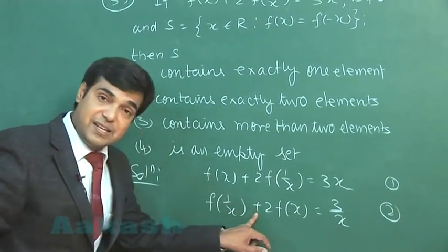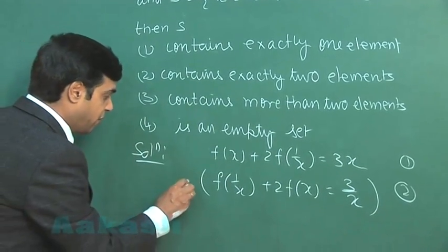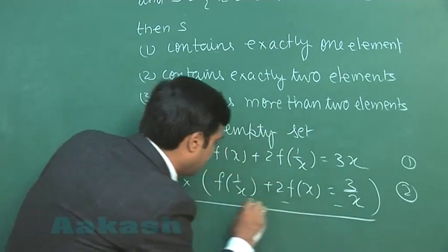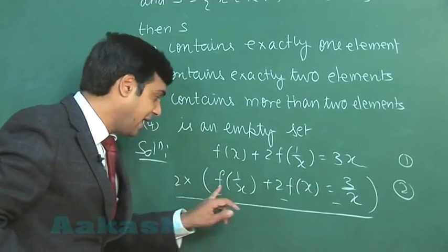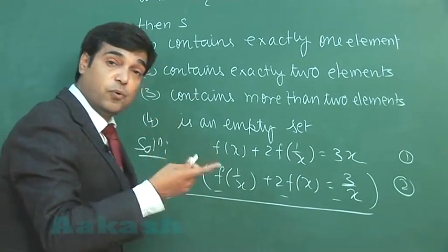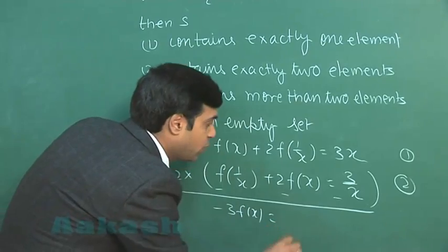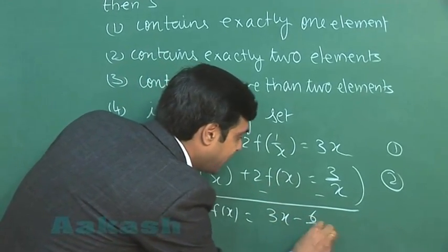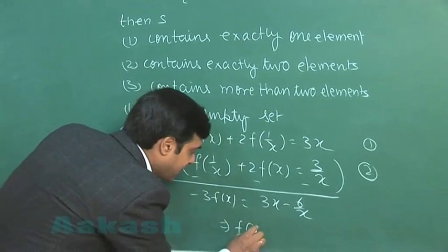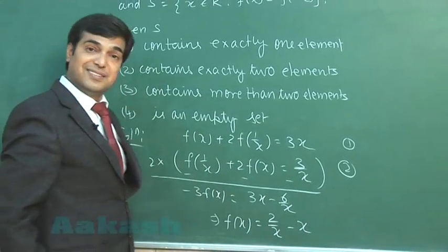We need f(x). So, what we can do is multiply this equation with 2 and simply subtract so that 2f(1/x) and 2f(1/x) are cancelled. We find f(x) - 4f(x) giving me -3f(x) = 3x - 6/x, or simply we can say the function f(x) is obtained as 2/x - x. This is clear?